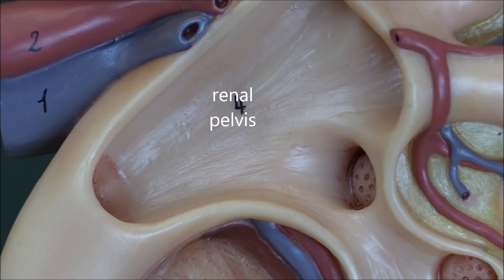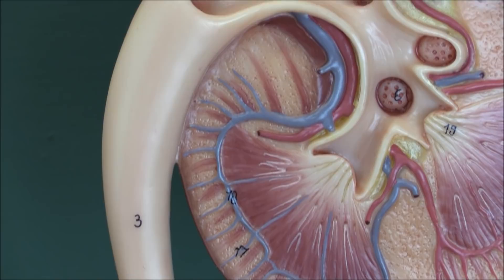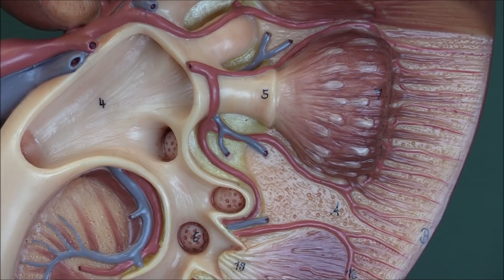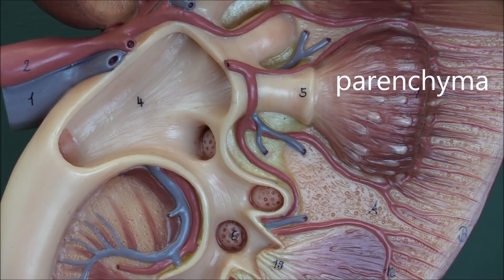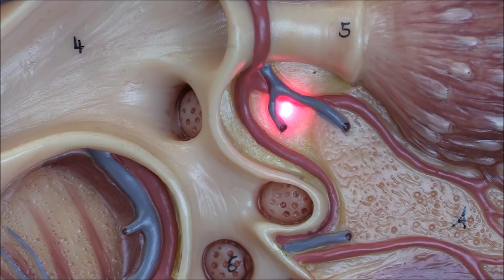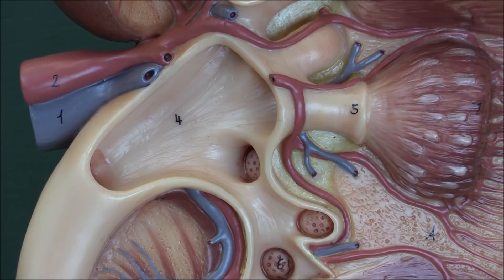The renal pelvis is the communication between the calyces and the ureter, which starts off on its fairly long journey down towards the urinary bladder. Collectively, the cortex and the medulla are described as the renal parenchyma. One way to think of it is the kidney is folded around on itself with a hollowed-out area in the middle — this hollowed-out area contains the calyces, blood vessels, lymphatics, and nerves, but it is not part of the renal parenchyma.